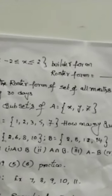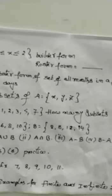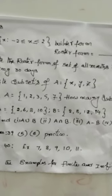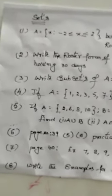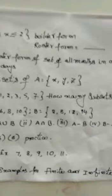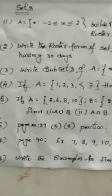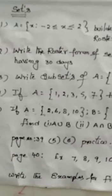At home, practice and do. Take your book and do it. First one is A is equal to x such that x is between minus 2 and 2, builder form. So you have to write the roster form. Second question, write the roster form of all months in the year having 30 days.